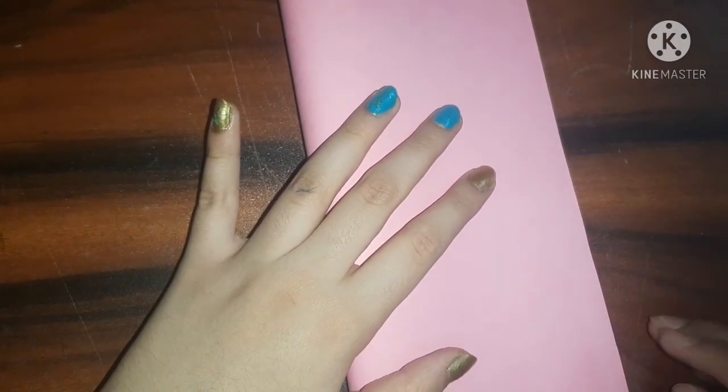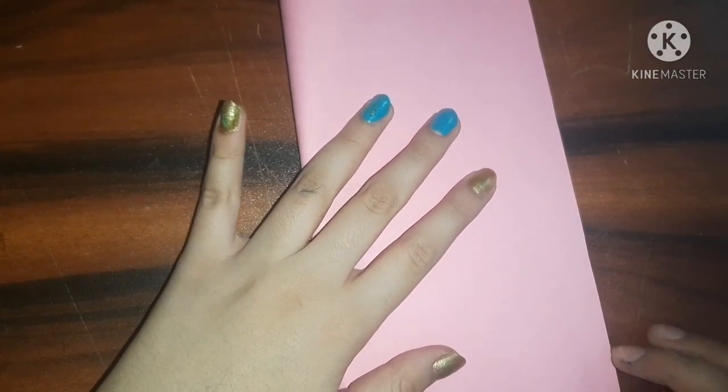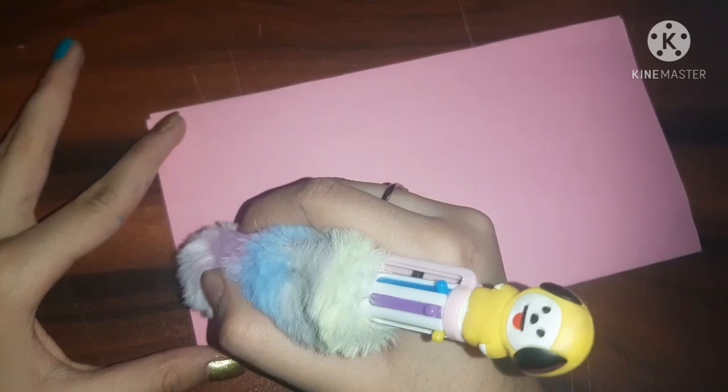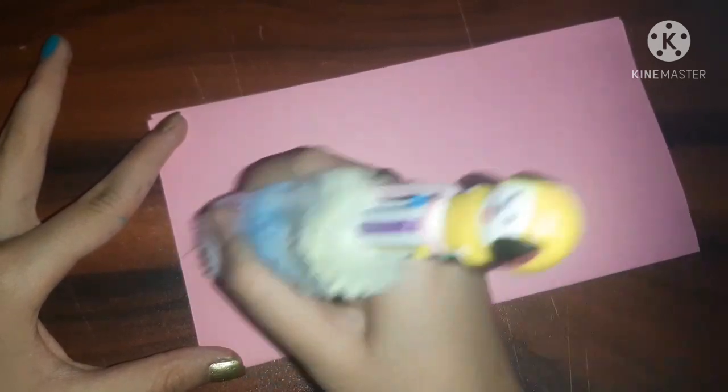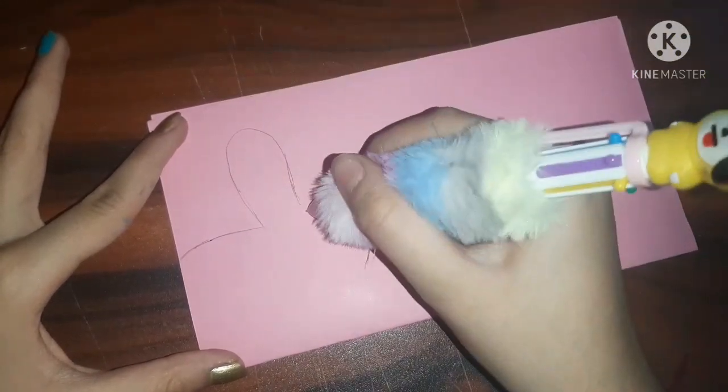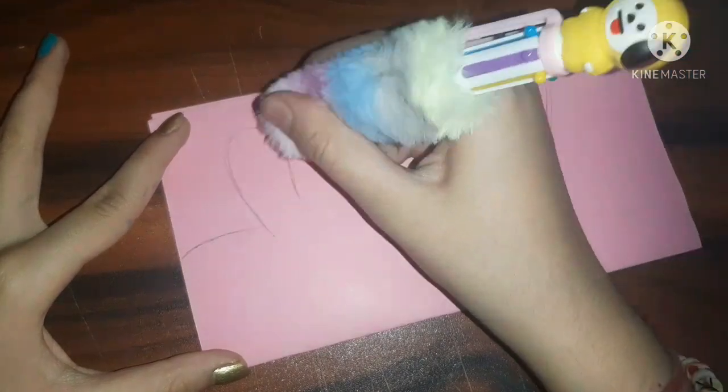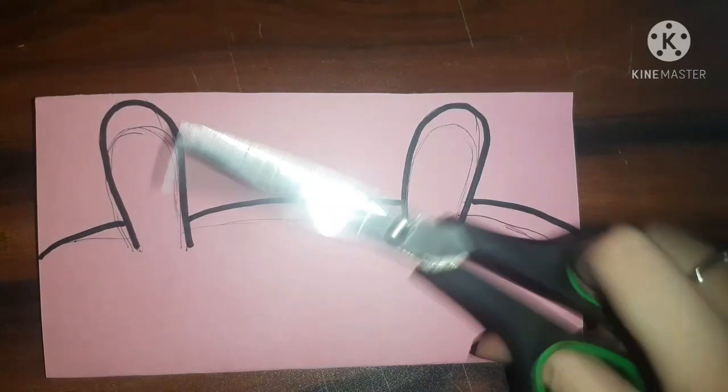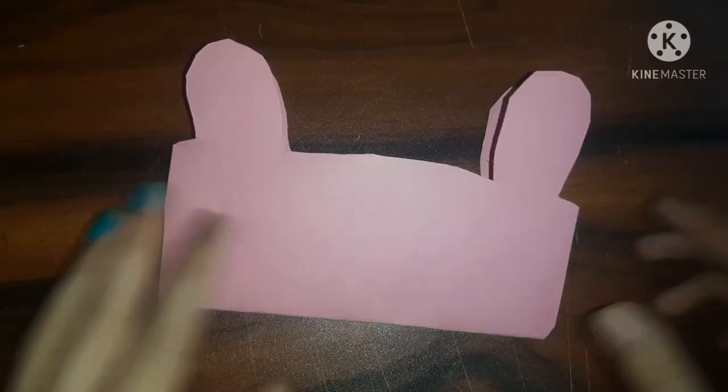So guys let's get started making our cute rulers or scales whatever you want to call. So for that first I'm taking a pink color paper and I'm going to fold it in half in the way shown. After that with the help of a pen I'm going to make ears. So here I'm making a bunny ear because I'm making a bunny shaped ruler. You can make any animal's ears which you have selected or you can even make a horn if you have selected unicorn.